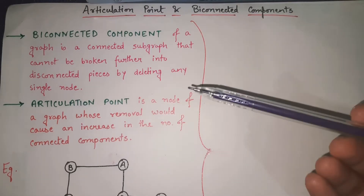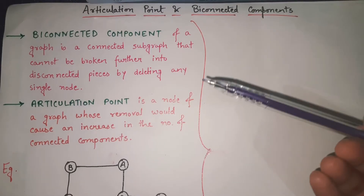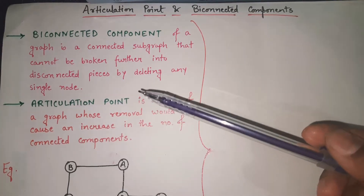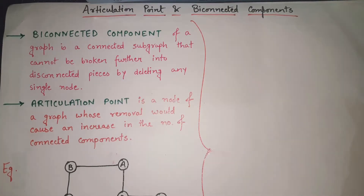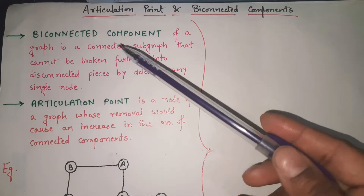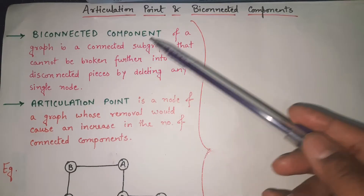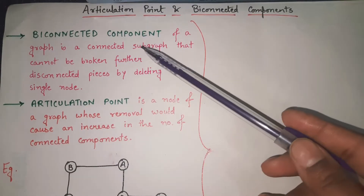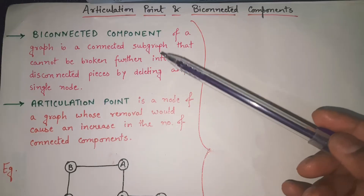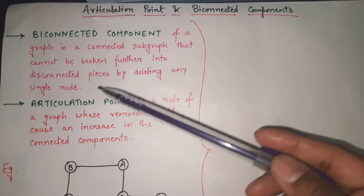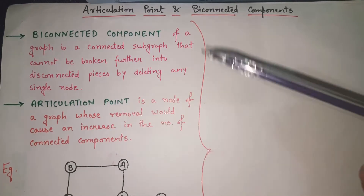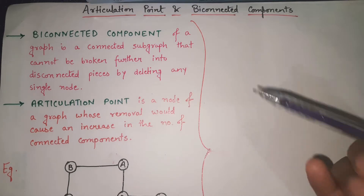First of all let us understand: if any graph is given to you, what is a biconnected component and articulation point in that graph. A biconnected component of a graph is a connected subgraph that cannot be broken further into disconnected pieces by deleting any single node.